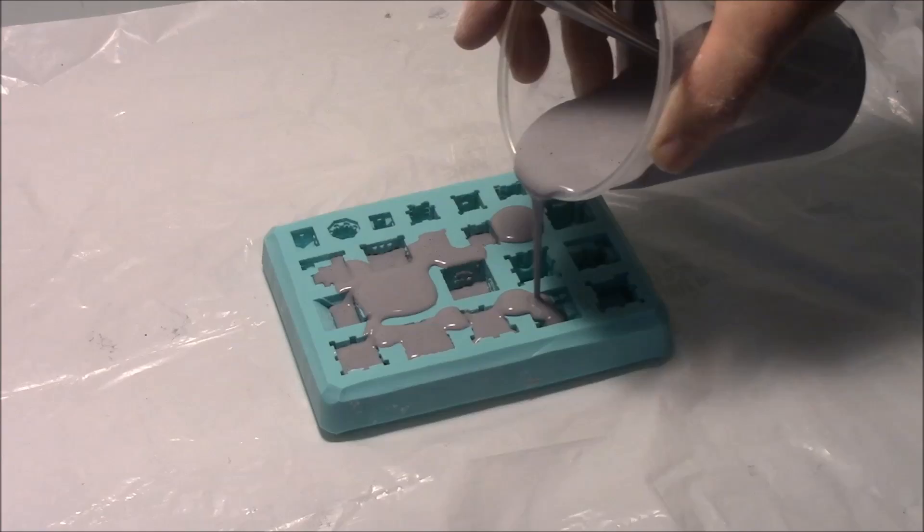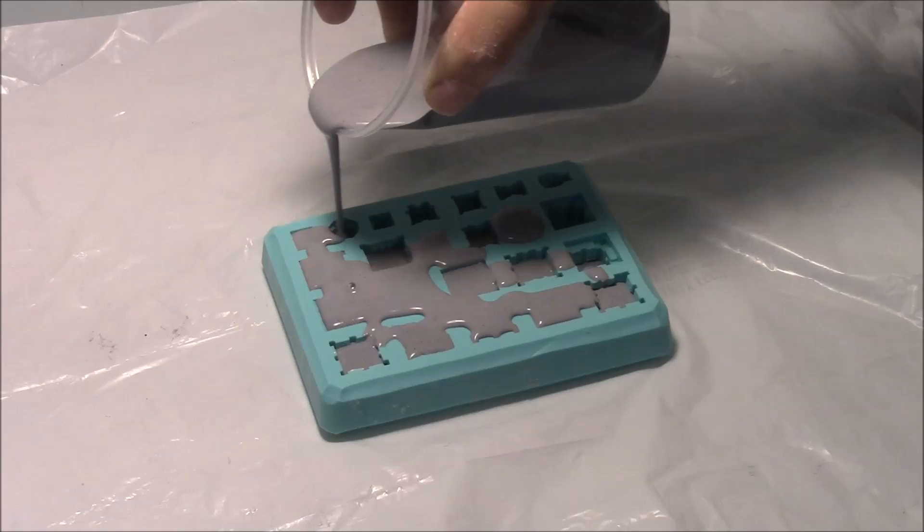For those of you not familiar with the process, I make and sell silicone rubber molds which you can pour in plaster of Paris, dental stone, or plastic resin.